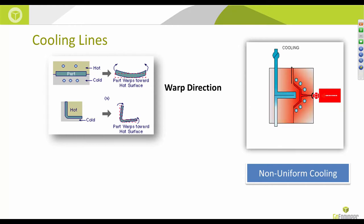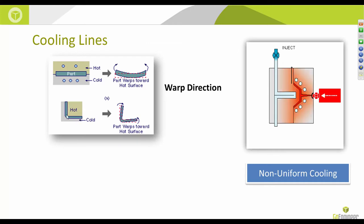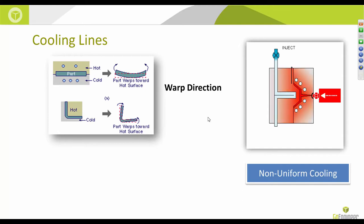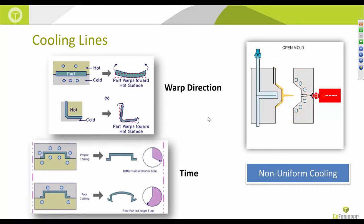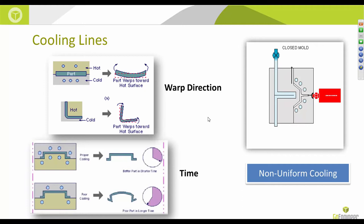For instance, the warp direction tends to be towards where the mold cavity is hotter. In this illustration, two cooling lines on the A-side and three on the B-side cause the part to warp towards the hotter A-side. A similar effect is seen in the second example where the inside of an L-shape is hotter and the part warps toward it. You can control warp direction by positioning cooling lines for uniform cooling.